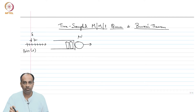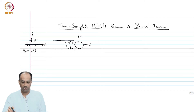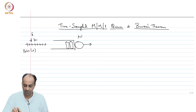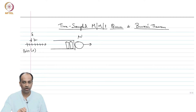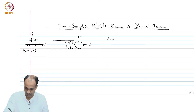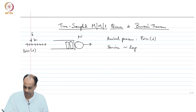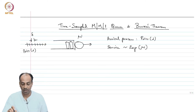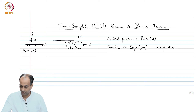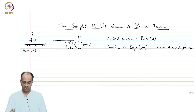Welcome back. In this module, we will discuss a time-sampled MM1Q and a very important theorem about the MM1Q known as Burke's theorem. You already know what an MM1Q is: you have an arrival process that is Poisson of rate lambda, service is IID exponentially distributed across customers with parameter mu, and the service process is independent of the arrival process. There is one server.